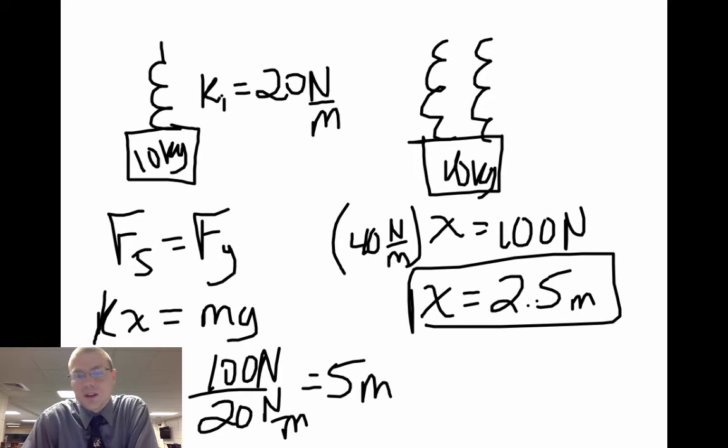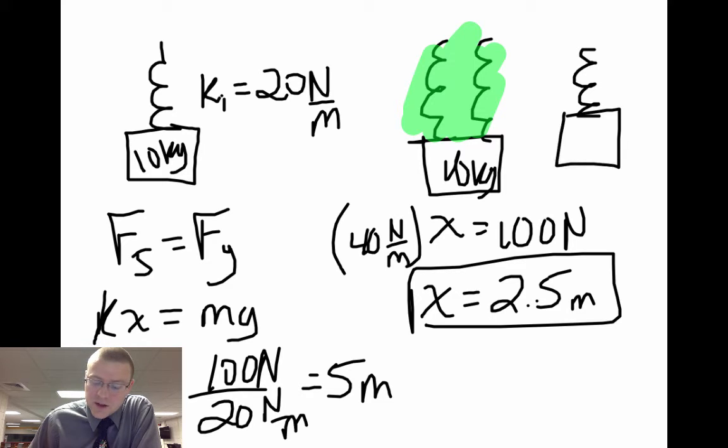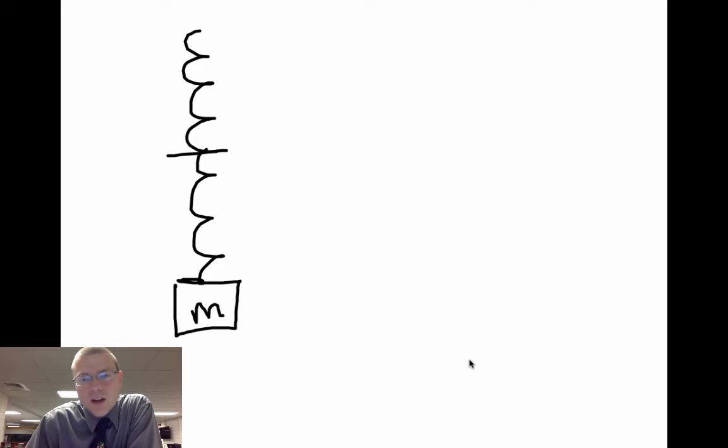What we mean by effective k constant is if I could eliminate these two springs with one equivalent spring that's just like the two individuals, I could replace this with one spring that had a 40 newton per meter k value and get the same exact answer. Another orientation we could have here is one spring attached directly to another spring in line with the weight hanging down underneath that. Those two springs are what we call in series with each other and we want to see how we can find the effective k constant of two springs in series. We want to take both of those springs and try to replace both with one equivalent spring that will do the same exact thing as these two individuals.